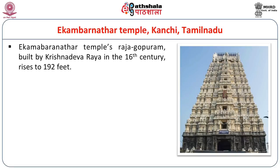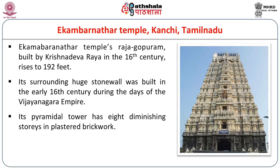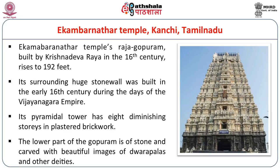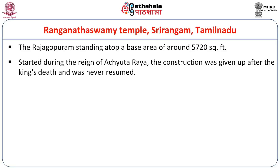The Ekambaranathar temple in Kanchi, Tamil Nadu has a huge Rajagopuram built by Krishnadevaraya in the 16th century, rising up to 192 feet. Its surrounding huge stone walls were built in the early 16th century. The pyramidal tower has eight diminishing stories in plastered brickwork; the lower part of the Gopuram is of stone and carved with beautiful images of the Dwarapalakas and other deities. The Rajagopuram — or Raya Gopuram — stands atop a base area of around 5,720 square feet. Started during the reign of Achyut Raya, the construction was abandoned after the king's death and was never resumed; it remains incomplete.